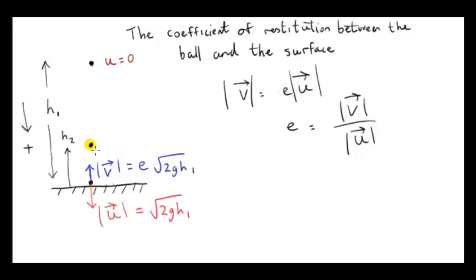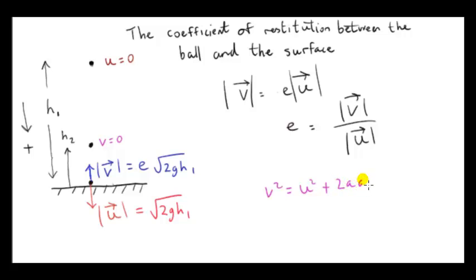The final velocity is 0. Now I'm using the formula v² = u² + 2as, because again we're dealing with linear motion with constant acceleration. However, the acceleration is now vertically downwards, whereas the initial velocity, e·root(2gh1), is upwards. So I'll take the upwards direction as positive for this final leg of the journey.